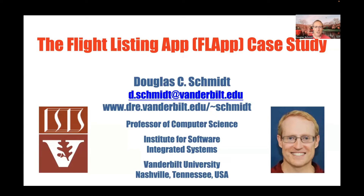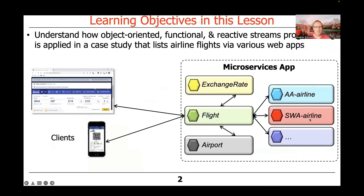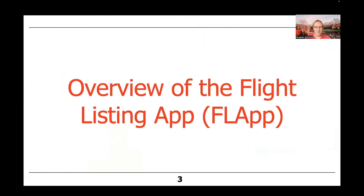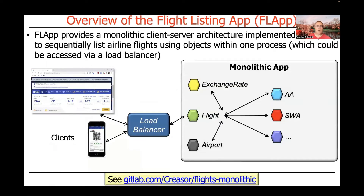Once again, we're going to return to our discussion of the flight listing app, or FLAP, case study. We've been through this before, so I'm going to skip over what we covered earlier and give you a quick recap before moving on. Going back to one of the first weeks in the course, I described a monolithic implementation — a classic client-server architecture implemented using Spring to sequentially list airline flights using objects in an object-oriented programming way, with all objects residing within one process.